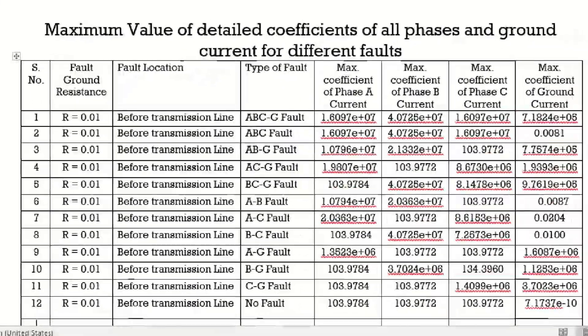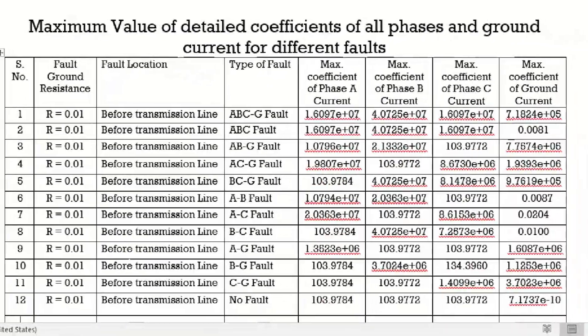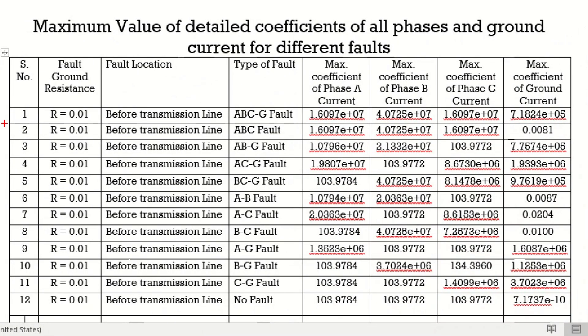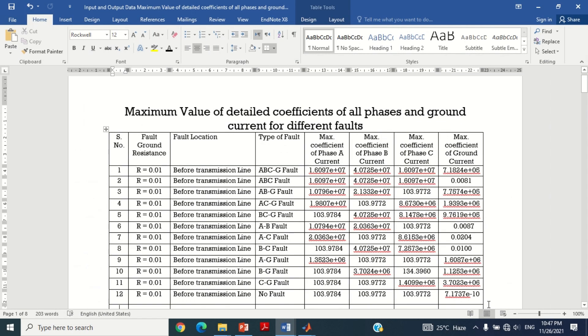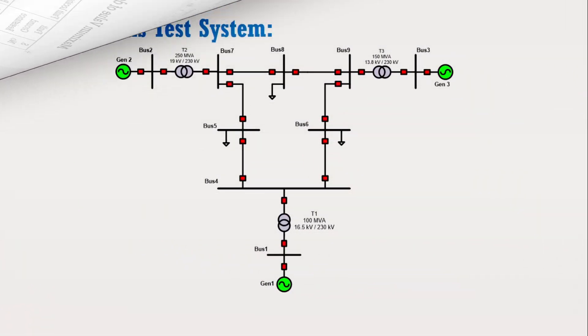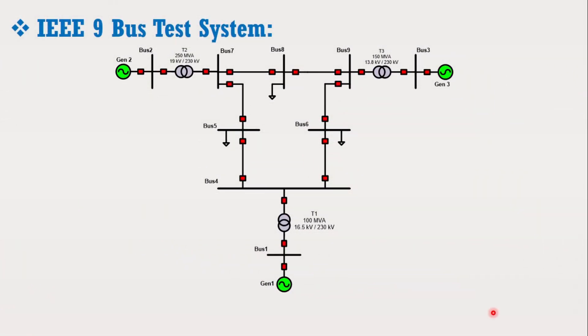By doing this, we will have 12 input data cases. For better accuracy, we must have input data of at least 100 cases or higher. If the power system size is large, then 100 input data cases can be easily obtained. Consider the single line diagram of the IEEE 9 bus system. In this system, if we apply all 12 fault conditions at each bus, we can generate 108 cases.